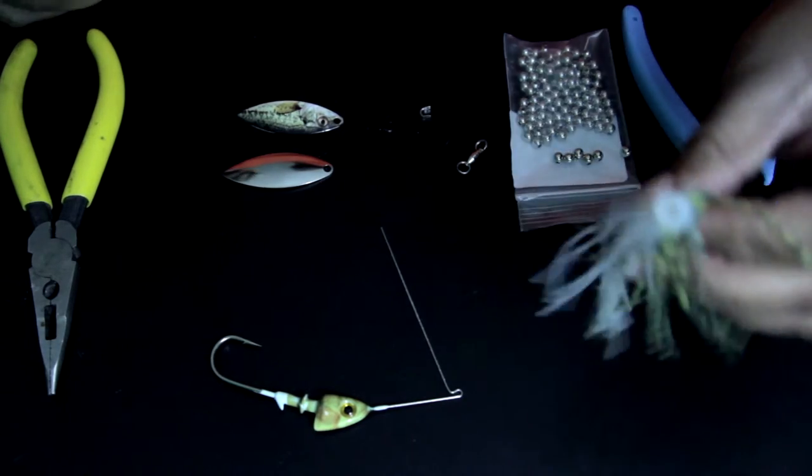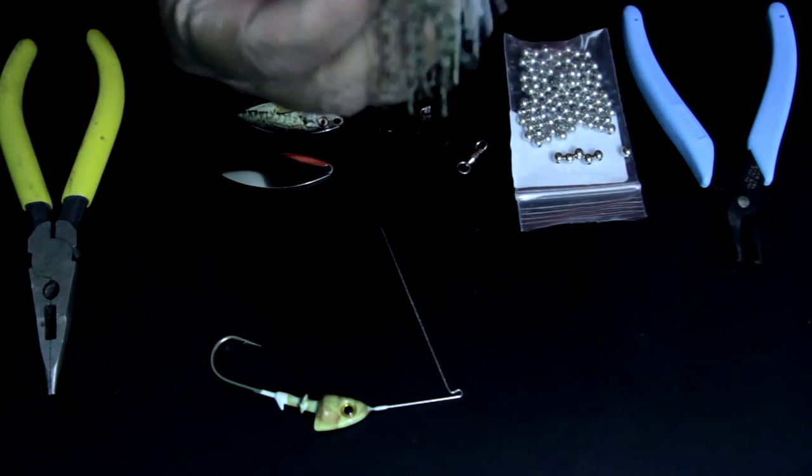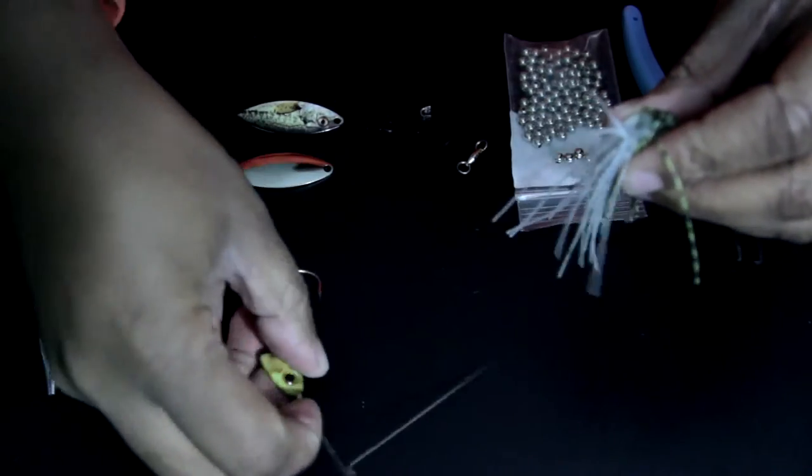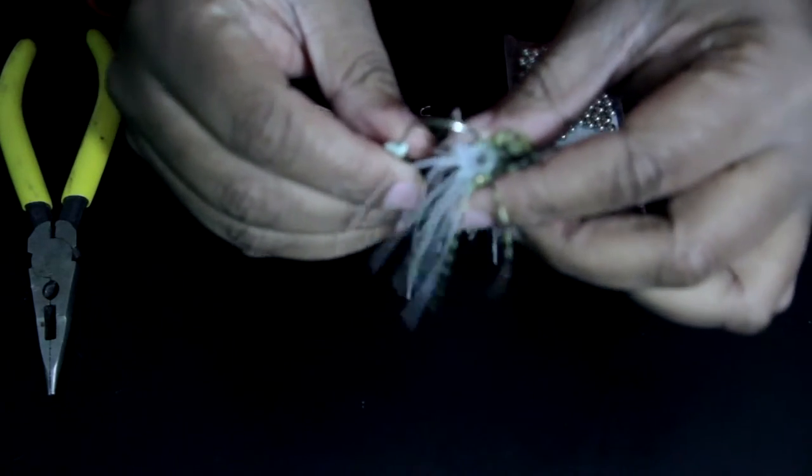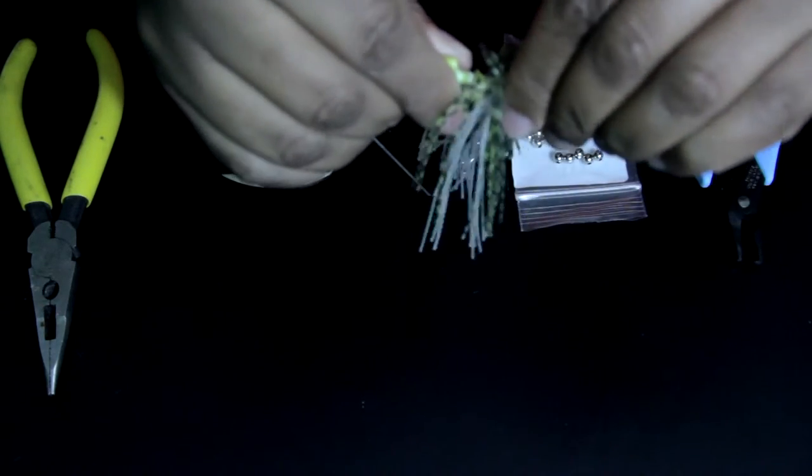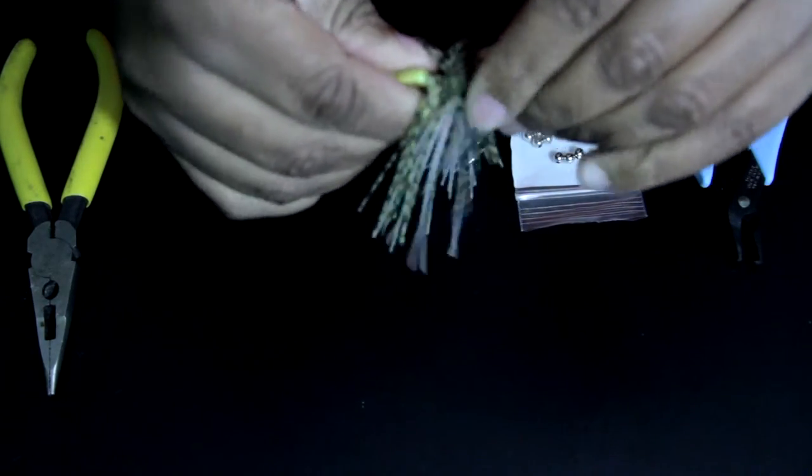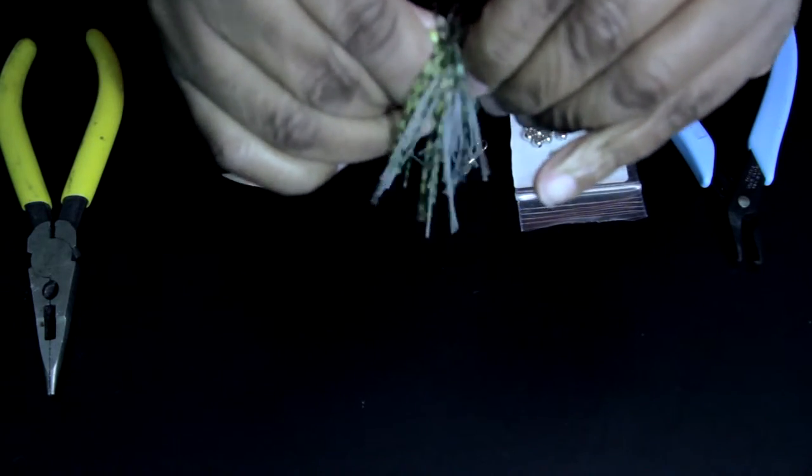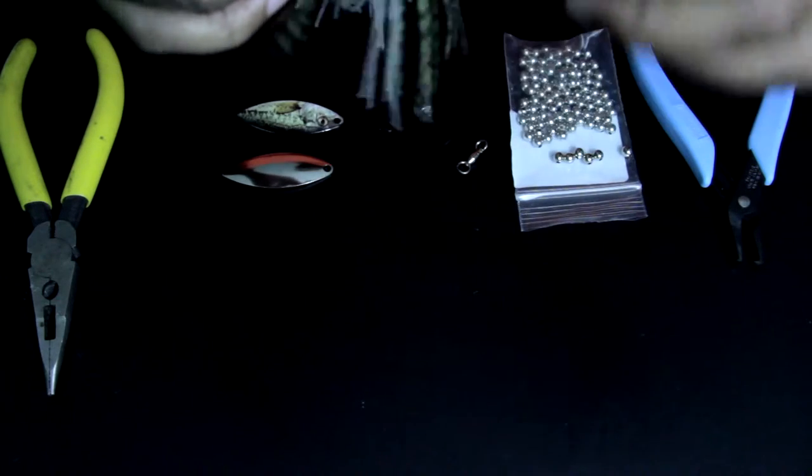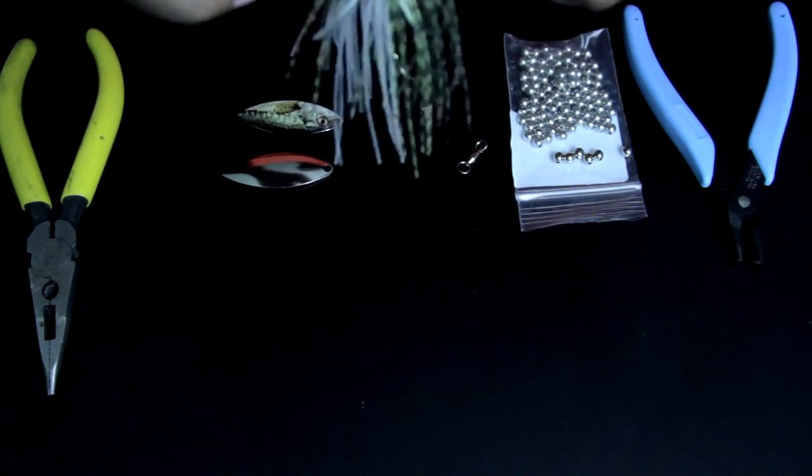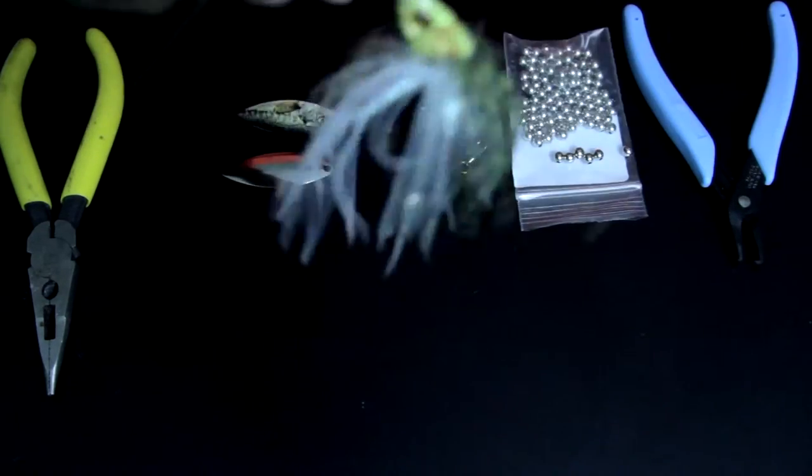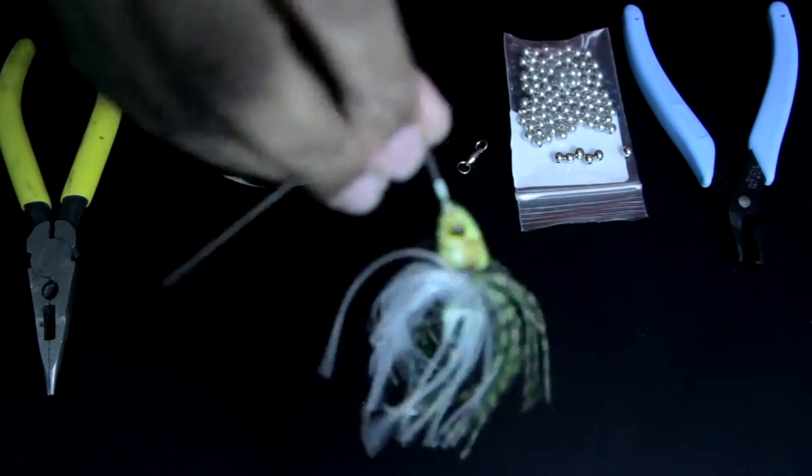So first thing I'm going to do is put the skirt on. I'm just going to grab the skirt and put the hook through it and slide it on. It's all rubber so you can just slide that sucker on until it gets all the way to the back of the head. Make sure the skirt's even. Bam! First part's done.